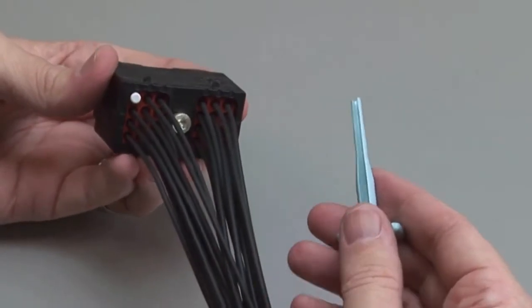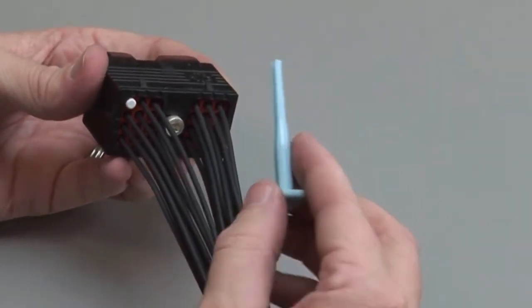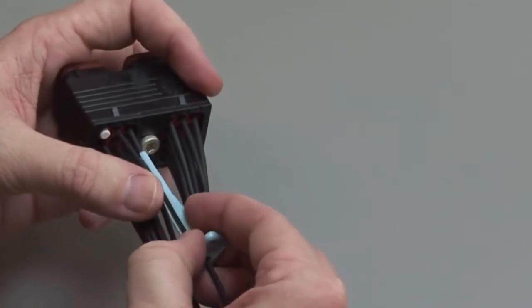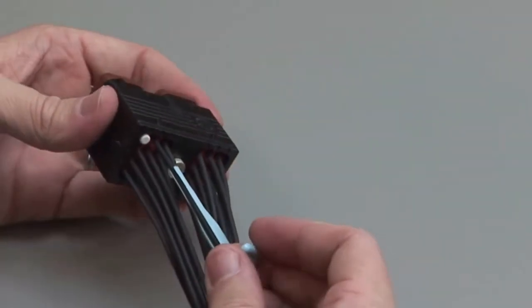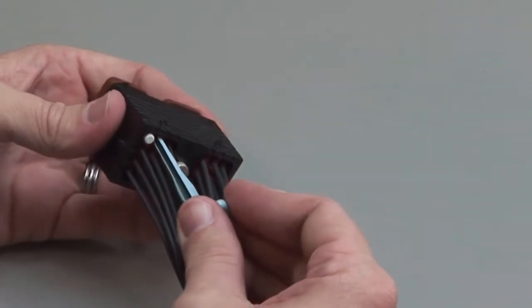Hold the connector so the rear grommet is facing you. Using the correct size plastic removal tool, snap the tool over the wire so it will slide down the wire.